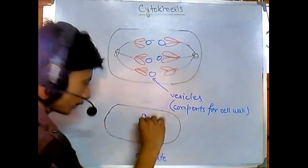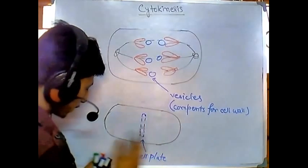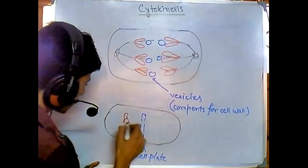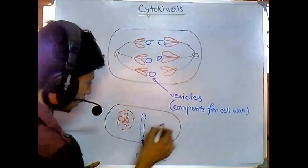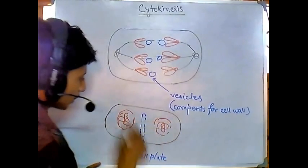The cell plate starts to occur and then the chromosomes start to go there and nucleus starts to build up on both sides. So nucleus starts to build up at both the side, but the cell plate starts to form.